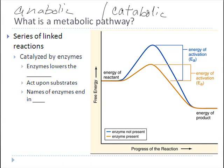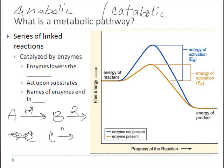Very frequently the process by which we perform either anabolic or catabolic reactions isn't the result of a single step. Usually there are multiple steps involved, and those multiple steps involve multiple enzymes. So maybe we start out with substrate A, enzyme number one converts it to substrate B, enzyme number two converts B to C, enzyme number three converts C to D, and D is the final product. Any time you have a sequence of steps like that, it's called a metabolic pathway.